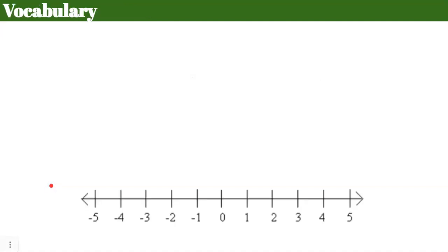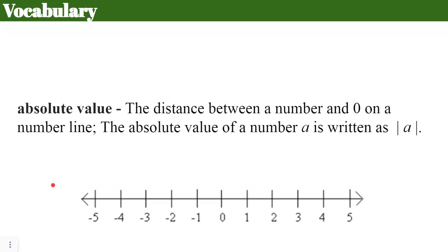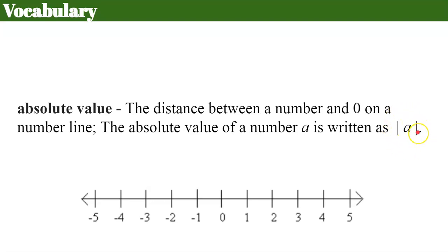So let's review some vocabulary. Absolute value by definition is the distance between a number and zero on a number line. The absolute value of a number a is written as the absolute value of a. These parallel lines are the symbol for absolute value, where a is representing any number.